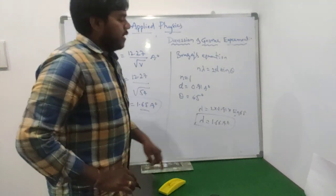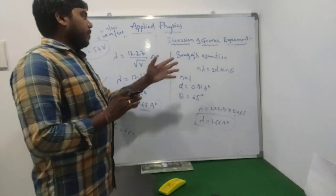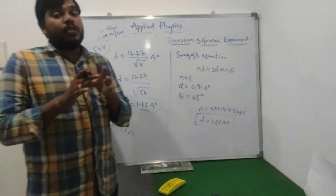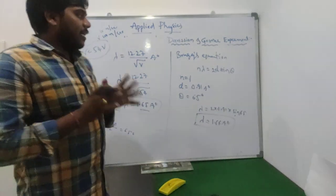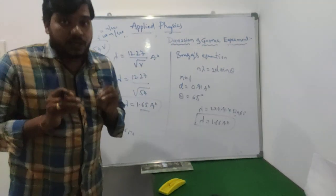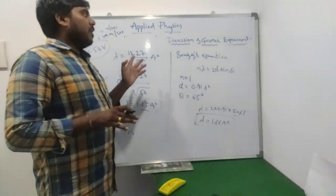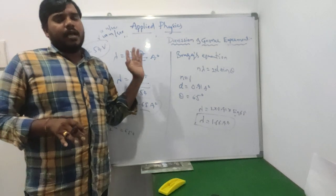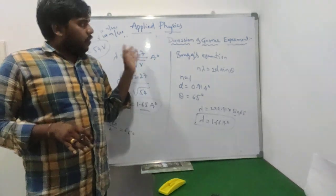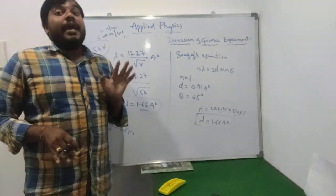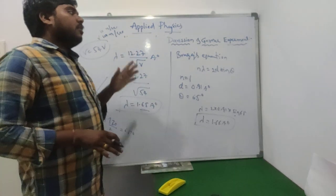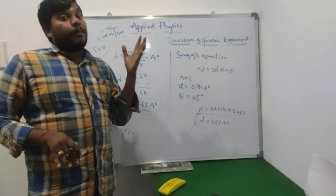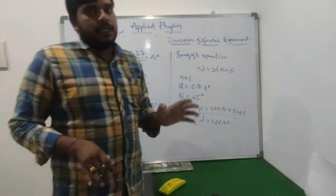Comparing the two results: the practical de Broglie wavelength is 1.65 angstroms and the theoretical Bragg's wavelength is 1.66 angstroms — both are almost equal. This agreement confirms that the Davisson-Germer experiment is experimental evidence for matter waves, practically proving what de Broglie proposed theoretically: that every moving particle is associated with a wave nature. Thank you and I will see you in the next video.